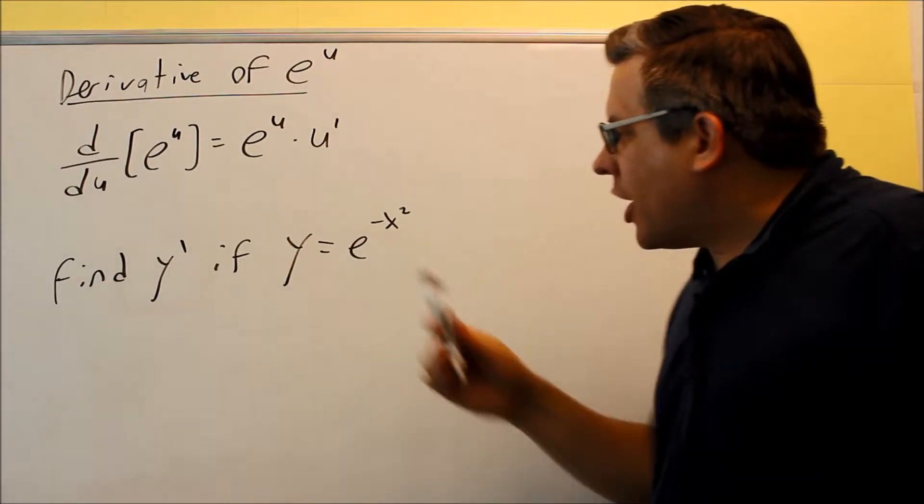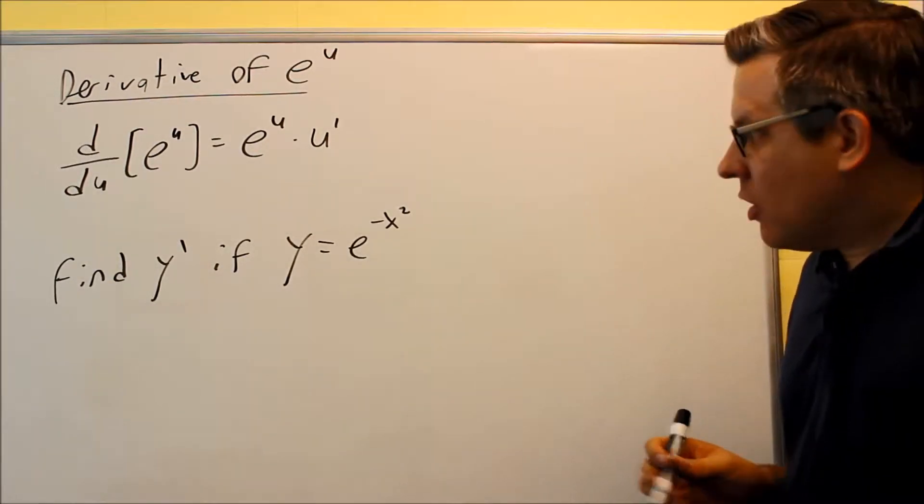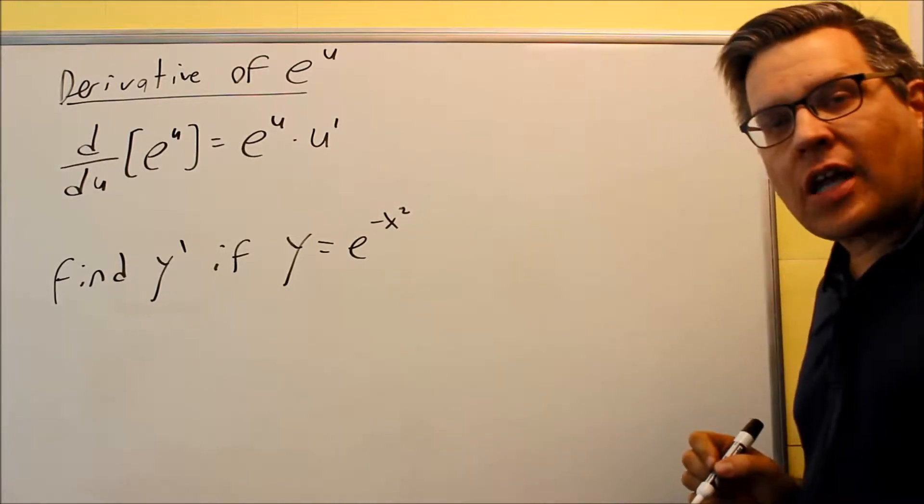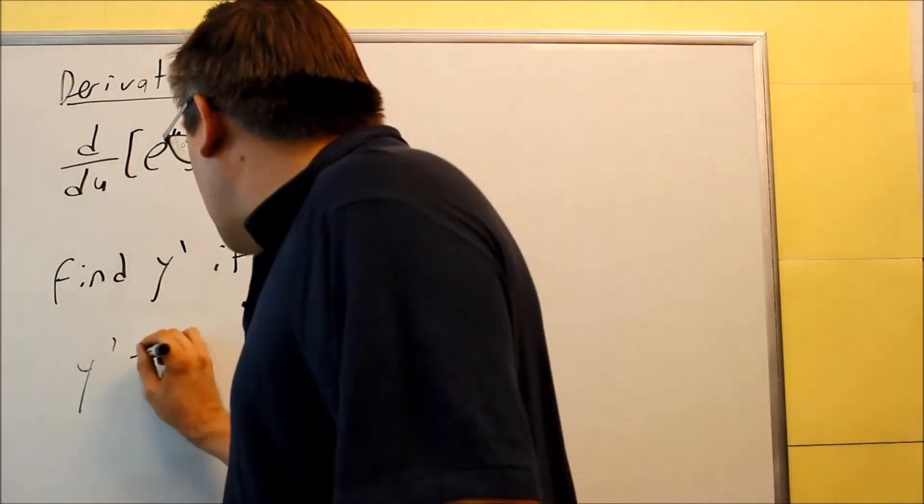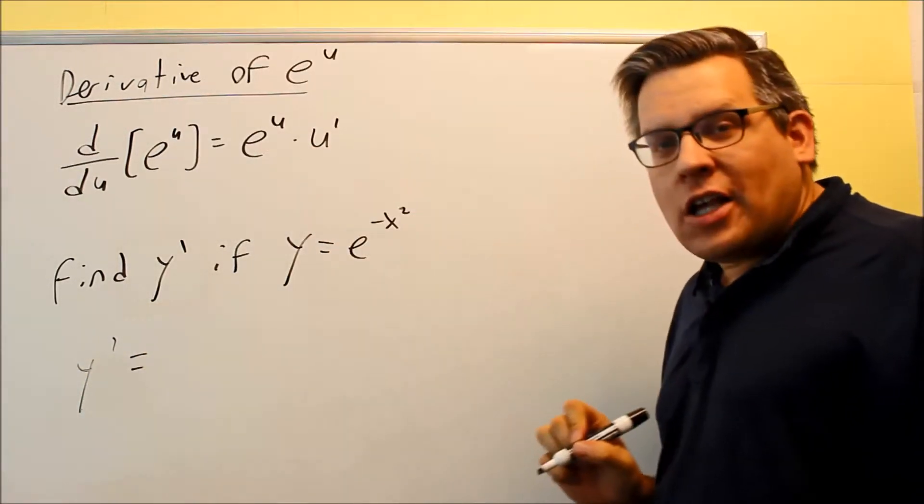Find y prime if y equals e to the negative x squared. In this case, your u is going to be negative x squared. So when you do the derivative, y prime is going to equal, we just write e to the u, so we're going to write the same thing that we started with.